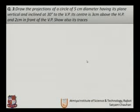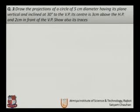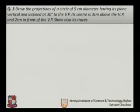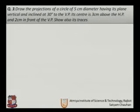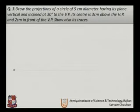The next problem: a circle plane of diameter 50 mm, having its plane vertical and inclined 30 degrees to the VP. Its center is 30 mm above the HP and 20 mm in front of the VP. We need to show its traces.